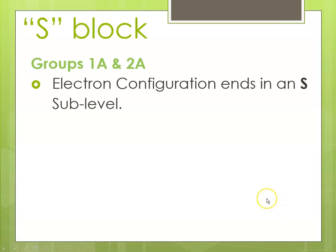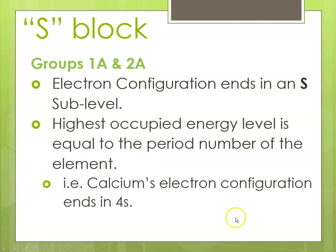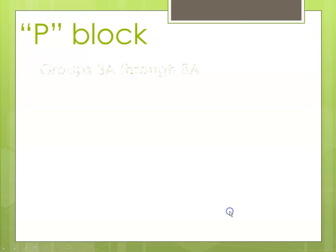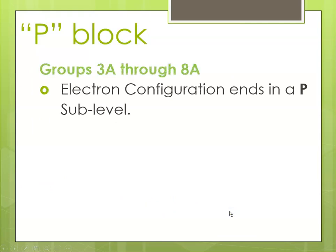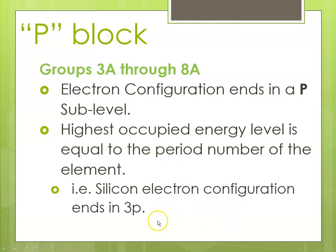Groups 1a and 2a, the electron configuration ends in an S sub-level, and the highest occupied energy level would be equal to whatever row or period number you're in. So calcium would end with 4s2 since it's in the second column of the S block. The P block, groups 3a through 8a, is where the P sub-level is filling, and again the highest occupied energy level would be whatever the row number is. So silicon ends in 3p because it's in the third row of the periodic table.